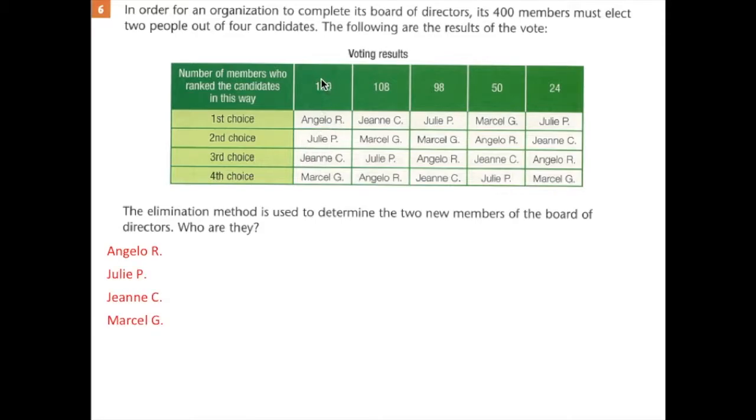And so Angelo has 120 people put him first. 120 first places. Julie has 98 plus 24, which is 122 firsts. Then Jeanne has 108 firsts. And Marcel has 50.